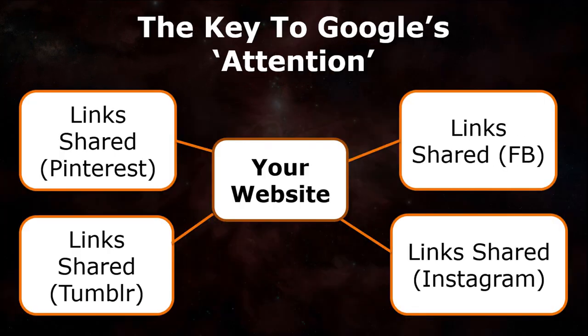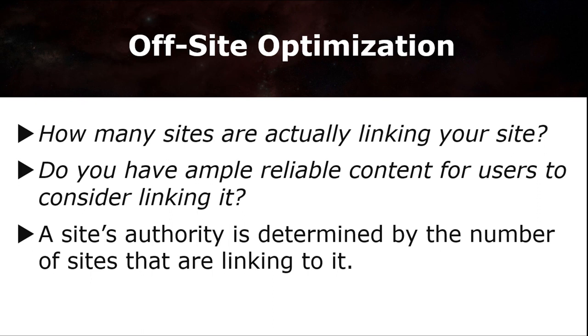The key to Google's attention is through links. The more links are being shared on multiple pages, the more important your site will look to Google. Your site is at the center and you have multiple sites sharing or linking your site. Google will define this as a presence of authority. The main challenge is how many sites are actually linking your site, or whether you have reliable content for users to consider linking. The perception of a site's authority is determined by the number of sites linking to it. When your link appears on bigger platforms and recognized blogs, it will steer your site to rank higher in Google's list.